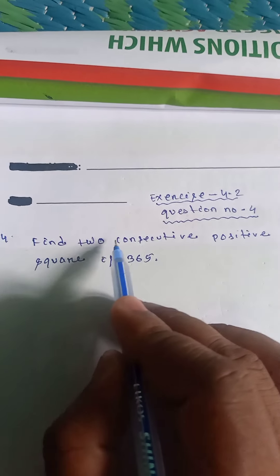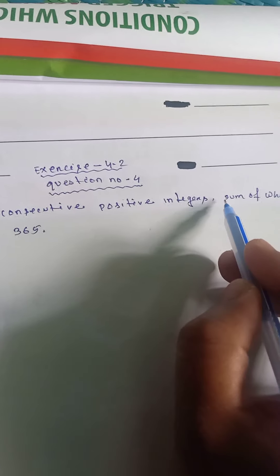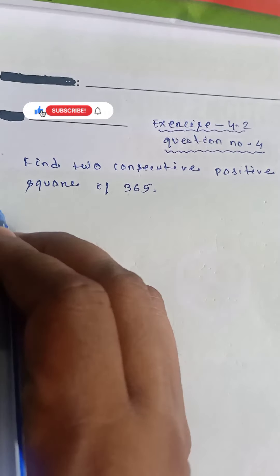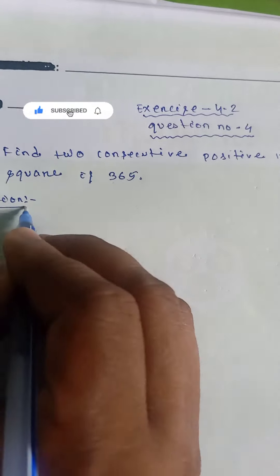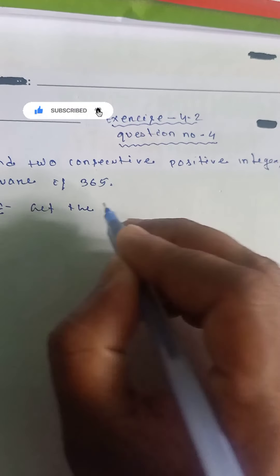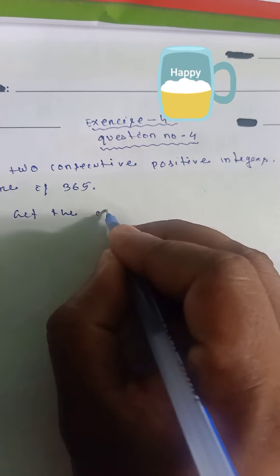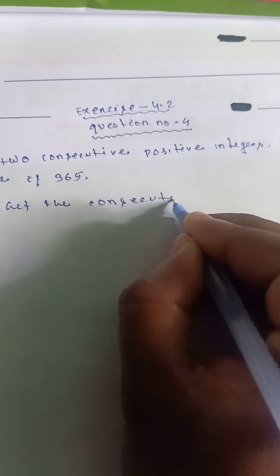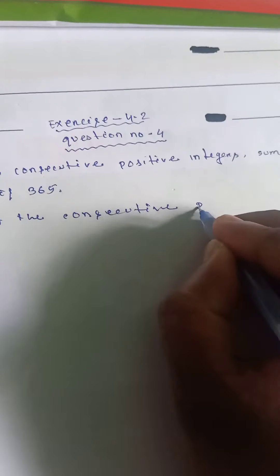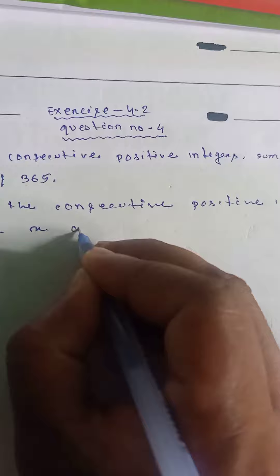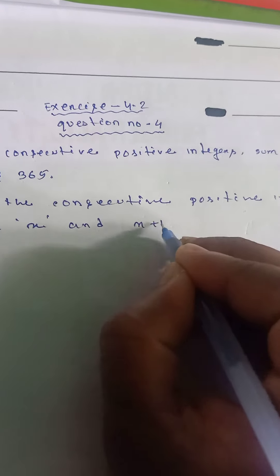Question number four: Find two consecutive positive integers, the sum of whose squares is 365. Solution: Let the two consecutive positive integers be x and x plus one.